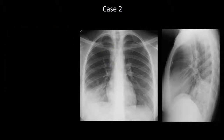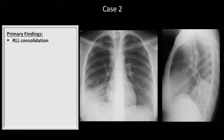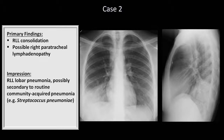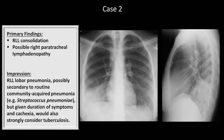So in summary, the primary findings are a right lower lobe consolidation and possible right paratracheal lymphadenopathy. The impression, given the patient's history and exam, is that the patient has a right lower lobe lobar pneumonia. Lobar pneumonia is most commonly seen in the context of a community-acquired pneumonia caused by strep pneumoniae or another relatively common pathogen. However, in this case, given the relatively long duration of symptoms, cachexia, and recent travel to an endemic area, tuberculosis should also be a strong consideration.